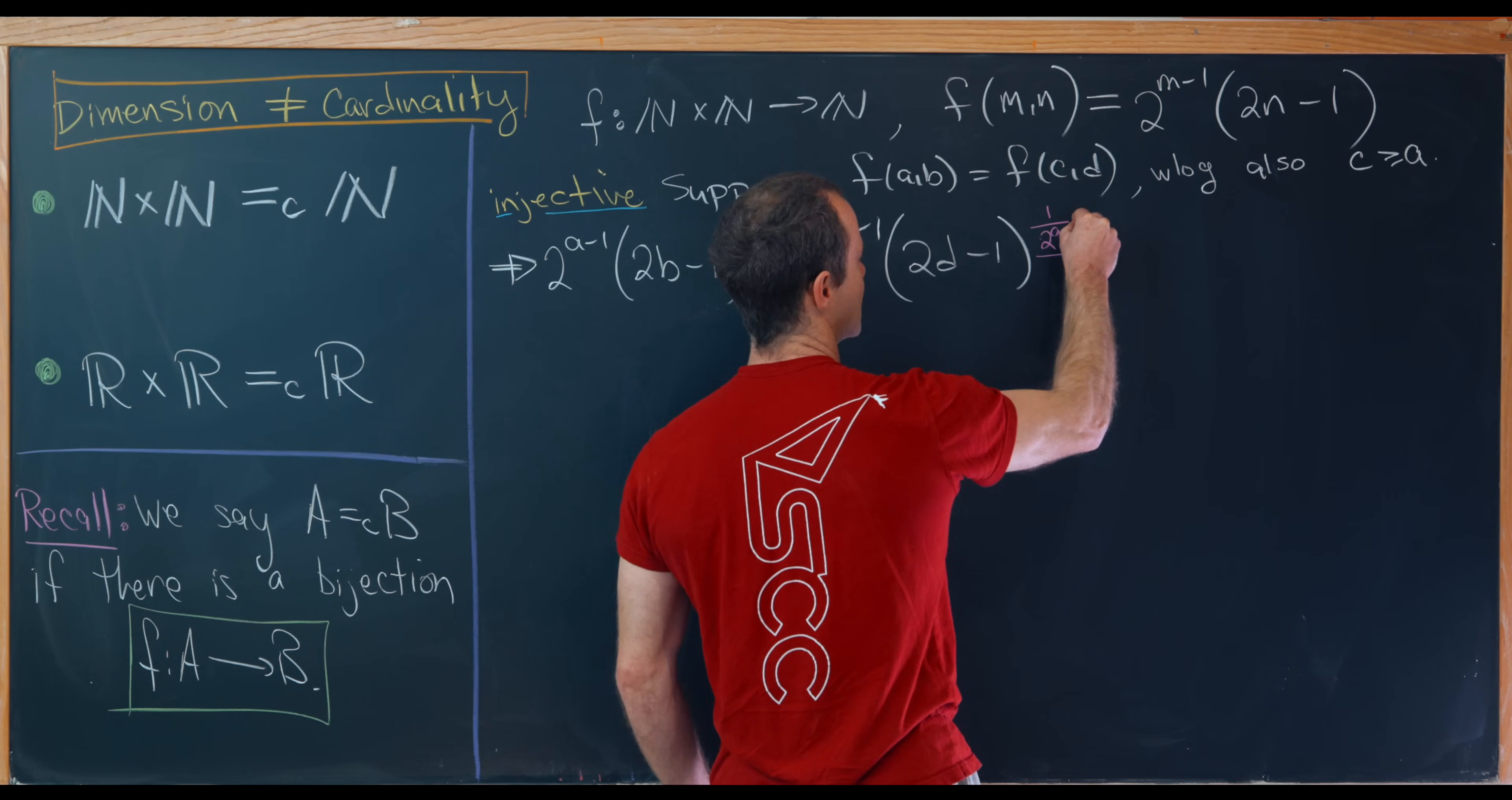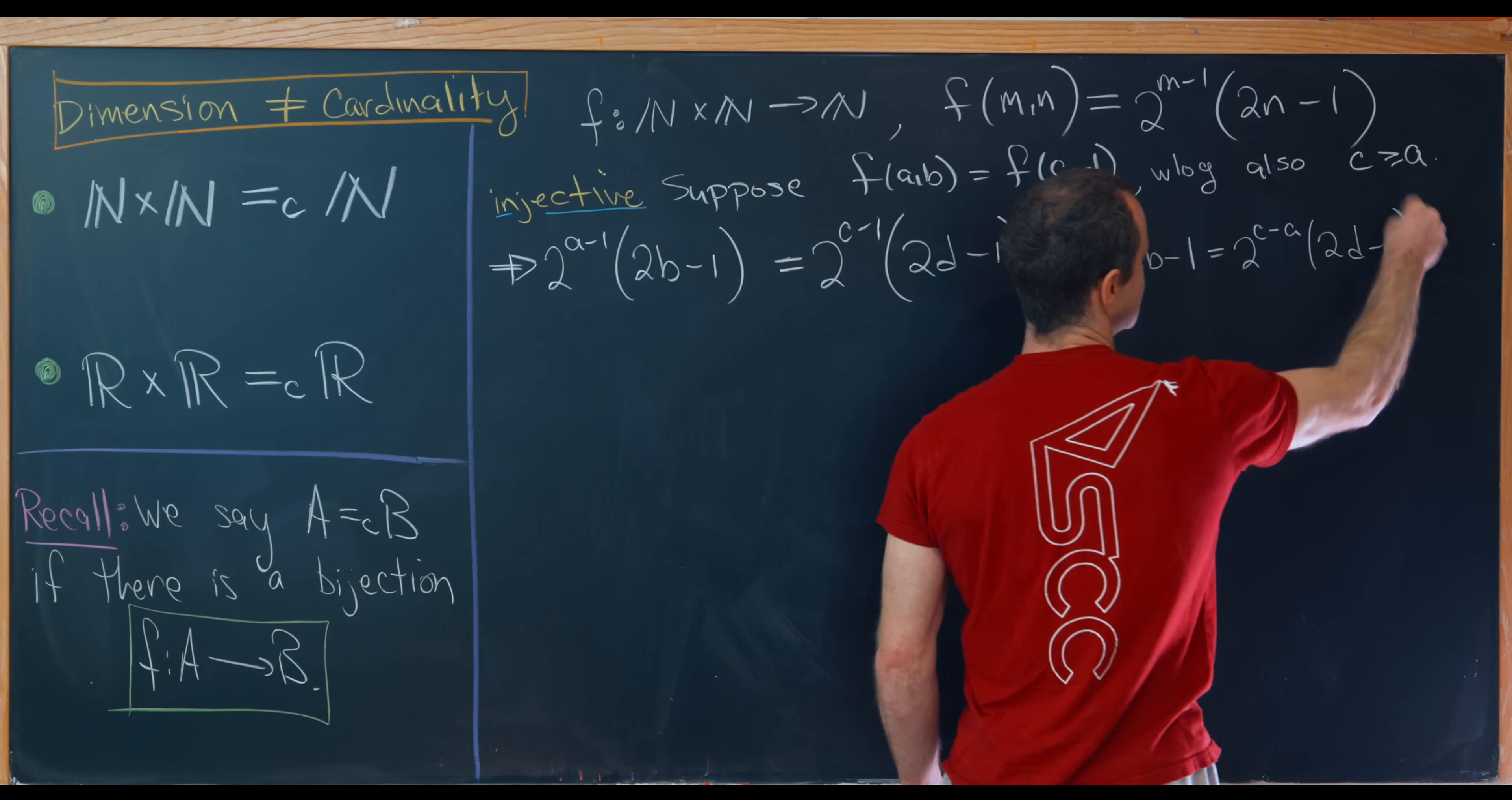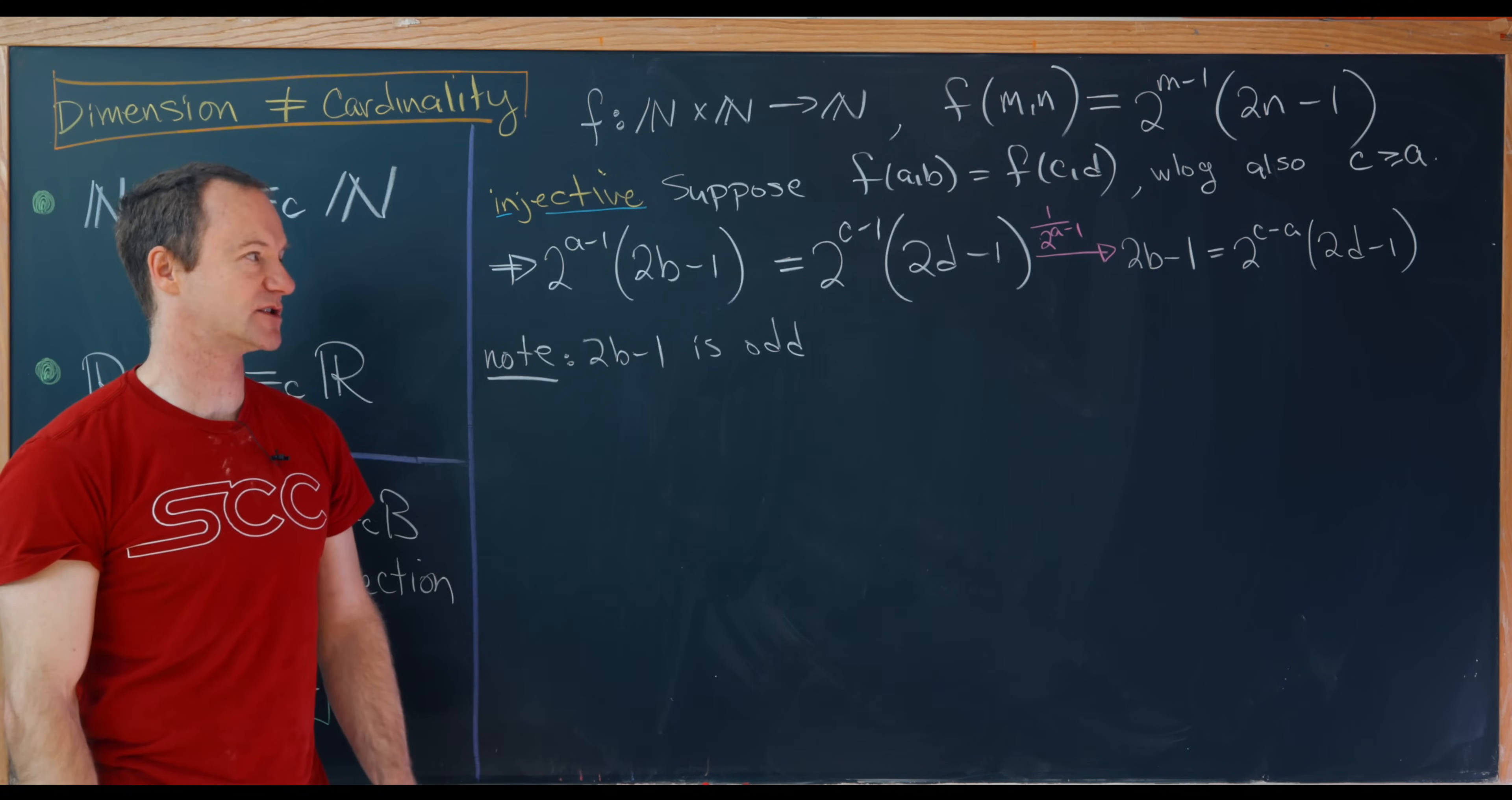So we're multiplying by 1 over 2 to the a minus 1, which is totally allowed if we work inside of the rational numbers, but as we'll see this in fact keeps us inside the natural numbers. So over here on the left hand side we'll be left with 2b minus 1, and then on the right hand side we'll be left with 2 to the c minus a times 2d minus 1. And now we're going to make a very important observation, and that is that 2b minus 1 is odd. But since 2b minus 1 is odd and we have the product of two numbers on the right hand side, each of those numbers has to be odd.